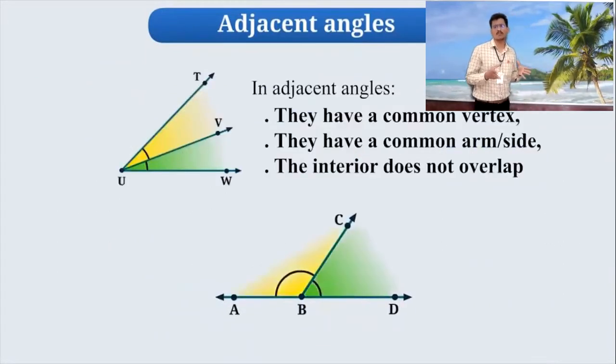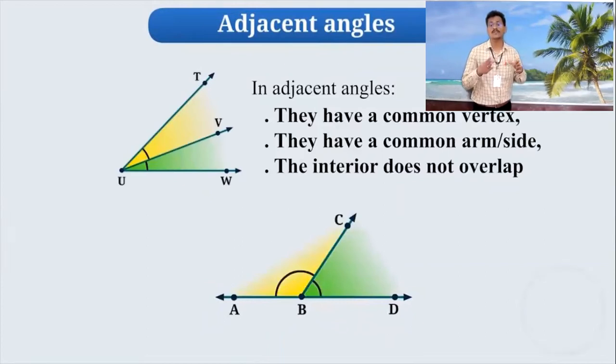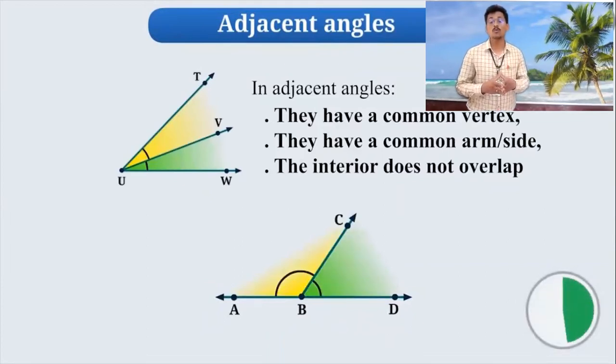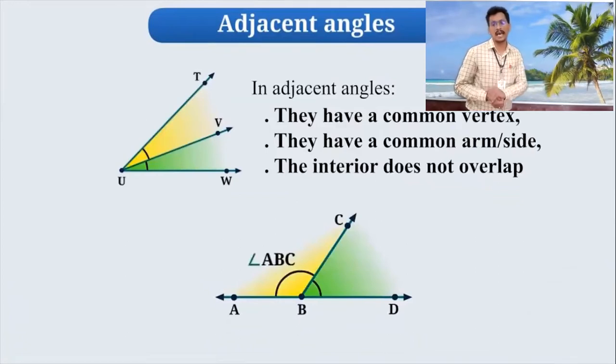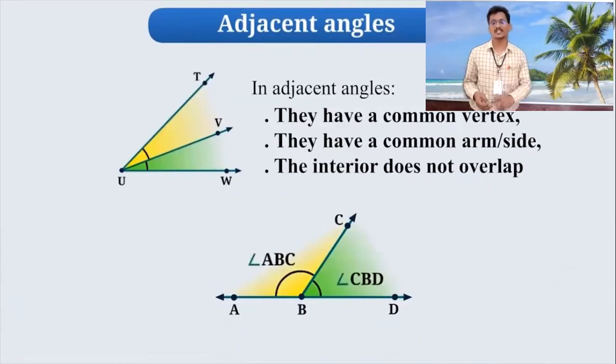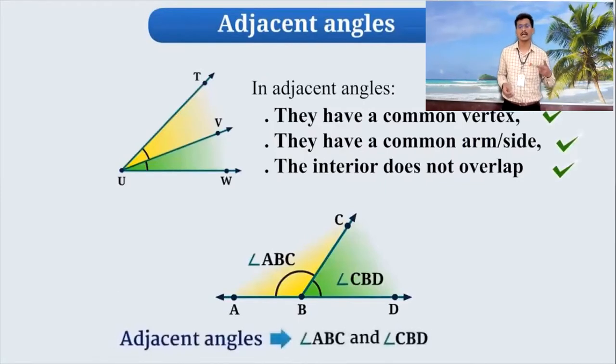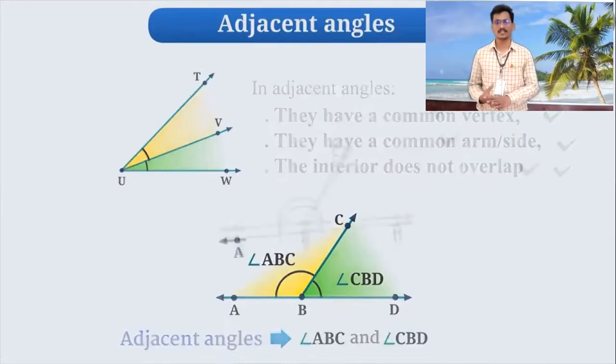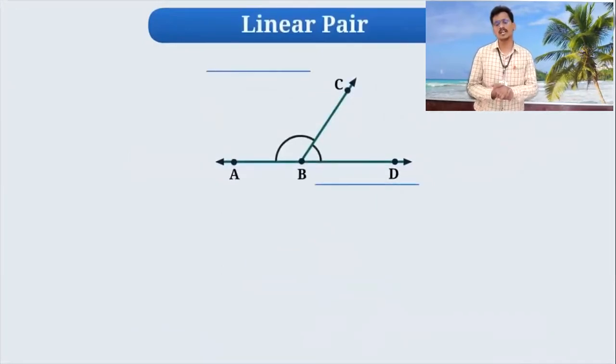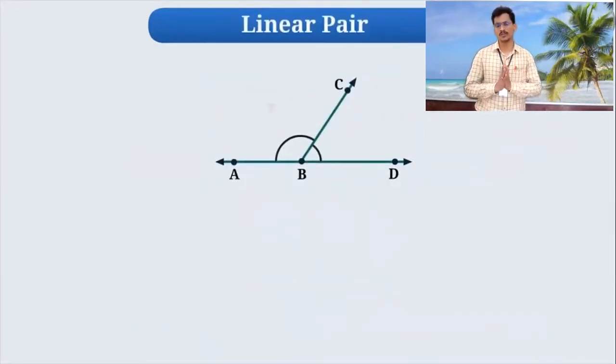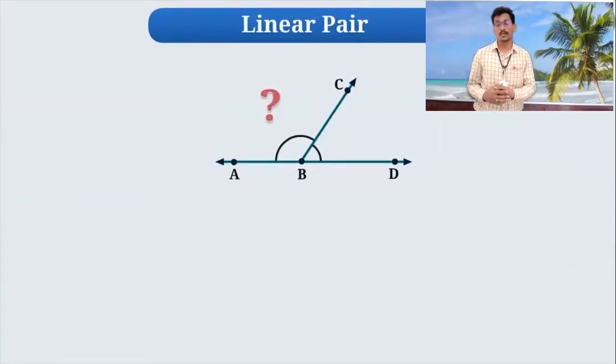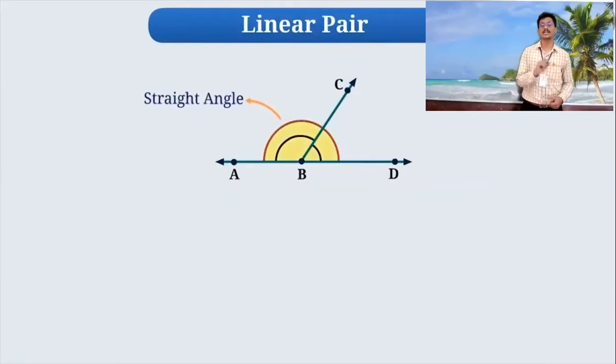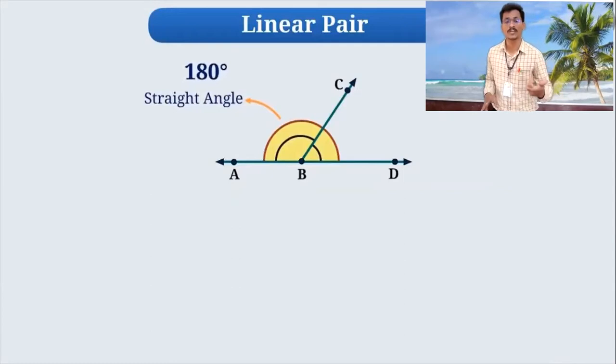Now what we can consider for adjacent angles: they have a common vertex, they have a common arm, and the interior does not overlap. So we can consider those two angles are adjacent angles. Now if you will check this figure carefully, what special property you can find, which is special in those. If you will check, this is complete straight angle and straight angle means angle measurement is 180°.